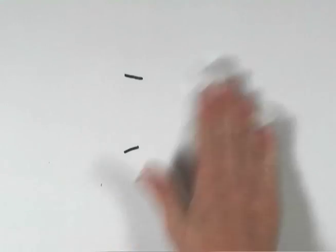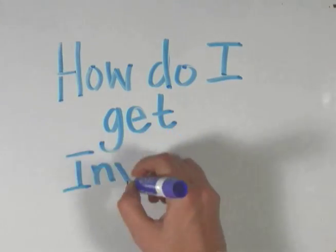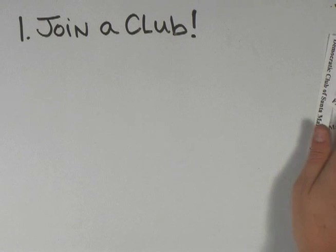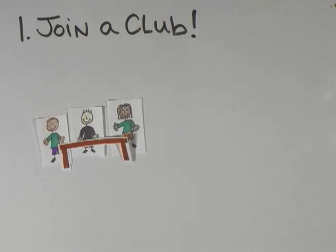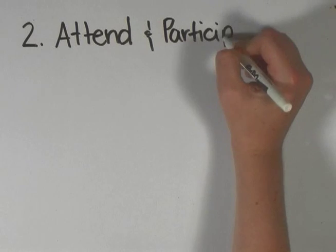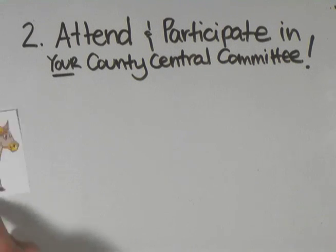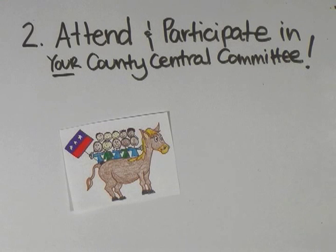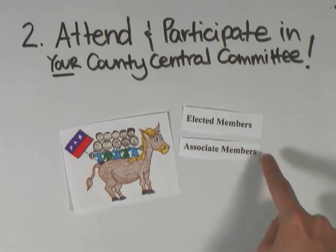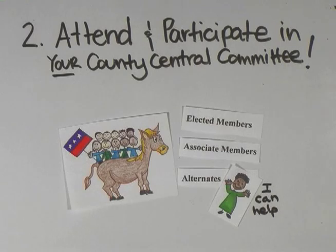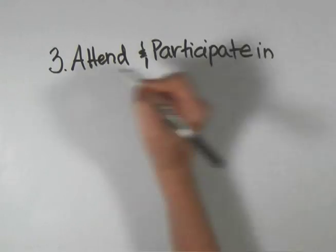Of course, there are a lot of active Democrats in California who are not delegates. If you want to get more involved or want to be a delegate in the future, there are a number of things you can do. You can join a Democratic club in your community — these volunteer groups generally meet once a month and do a lot of important work to elect Democrats and support Democratic values. You can attend and participate in your county central committee, which generally meets monthly at a regular time and place. Meetings are open to all Democrats, and many county committees offer associate memberships. County committee members are also generally allowed to select an alternate who can vote in their place when they can't attend a meeting. A lot of delegates and county committee members first got involved as alternates on a county committee.